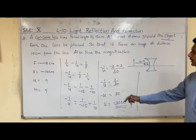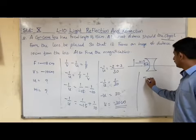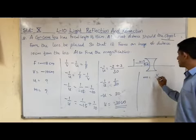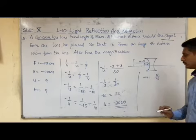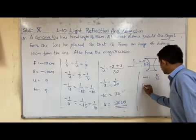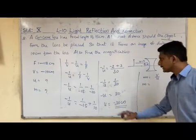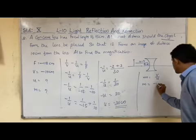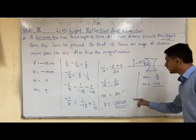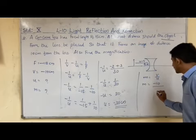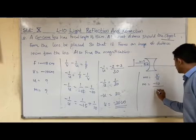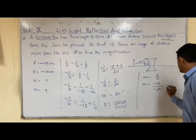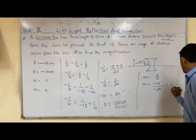Now for magnification: m equals v/u. v is −10 cm and u is −30 cm, so m equals (−10)/(−30) equals 1/3. The magnification is 1/3.